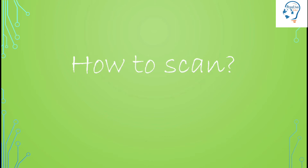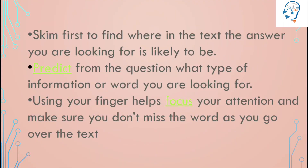Now let's discuss how to scan. First, skim to find where in the text the answer you are looking for is likely to be. Skimming tells us where to look. After skimming, you will have already underlined key words — names, dates, specific details, country names — which give you hints about which part of the text contains the answer.